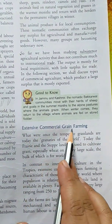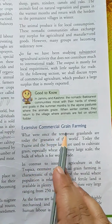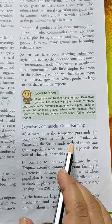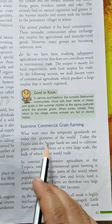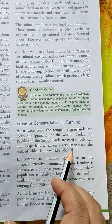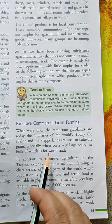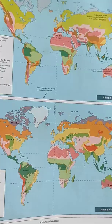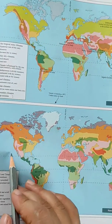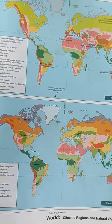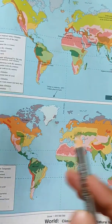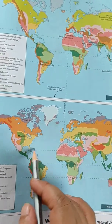Extensive commercial grain farming. What were once the temperate grasslands are today the granaries of the world. Today the prairies and steppes land are used to cultivate grains, especially wheat on a very large scale, the bulk of which is for world trade. Prairies and steppes were once the temperate grasslands, but today these temperate grasslands have been converted to agriculture fields.